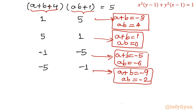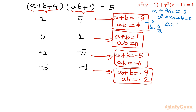Now we identify where we get real integer solutions. For Case 1: from ab = 4, write b = 4/a and substitute into a + b = −3, giving a + 4/a = −3, so a² + 3a + 4 = 0. Check discriminant: Δ = 9 − 16 = −7, which is negative. Complex solution — rejected.